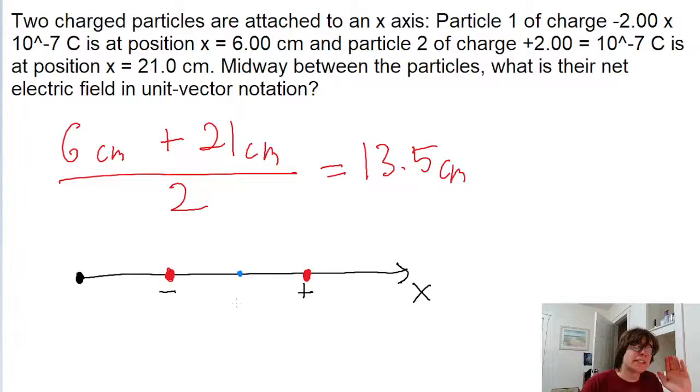Now to analyze the particles, I've drawn a diagram of that axis. So this is the x-axis pointing to the right, and I've drawn the two particles in red, and I've represented their midpoint with this point right here in blue. The problem tells us that the leftmost particle, the one at 6 centimeters, is negatively charged, and the one at 21 centimeters is positively charged.